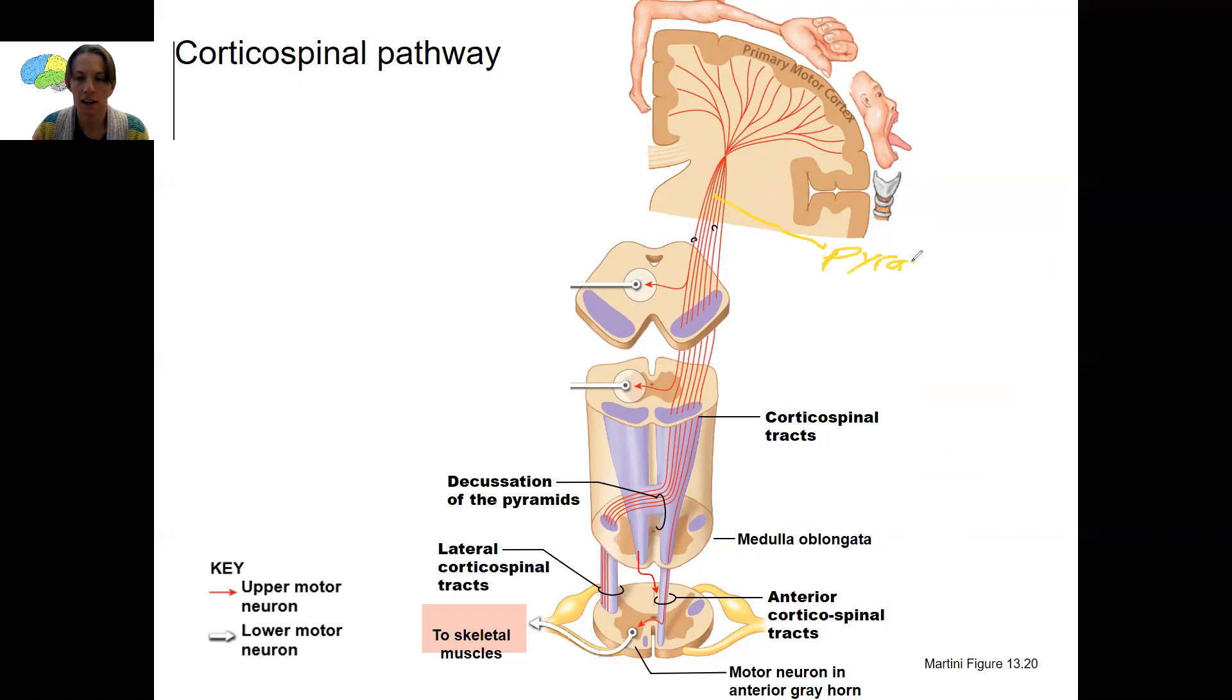So we've got these pyramidal cells that are going to travel down into the brain stem and then become the pyramids that then decussate along here. That's where the left side of your body controls the right side. The left side of your brain controls the right side of your body and vice versa because of that decussation.